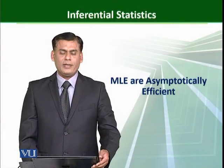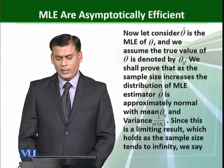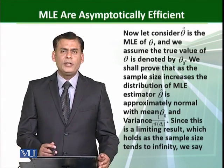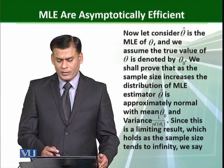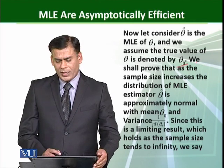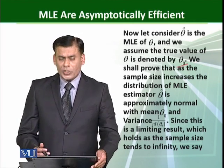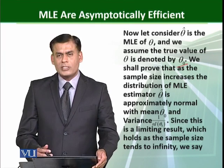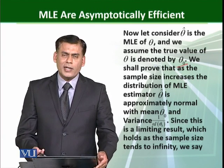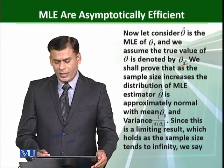MLEs are asymptotically efficient. Let theta hat be the MLE of theta, and assume that the true value of theta is theta naught. We shall prove that as the sample size increases, the distribution of the MLE theta hat approaches the normal distribution with mean theta naught and variance 1 over n times I of theta naught.